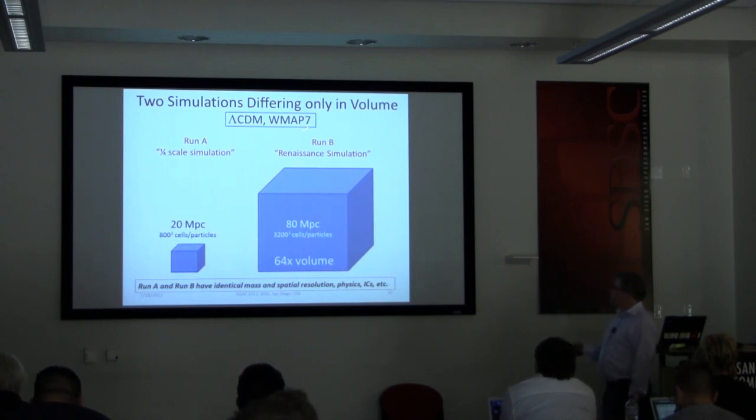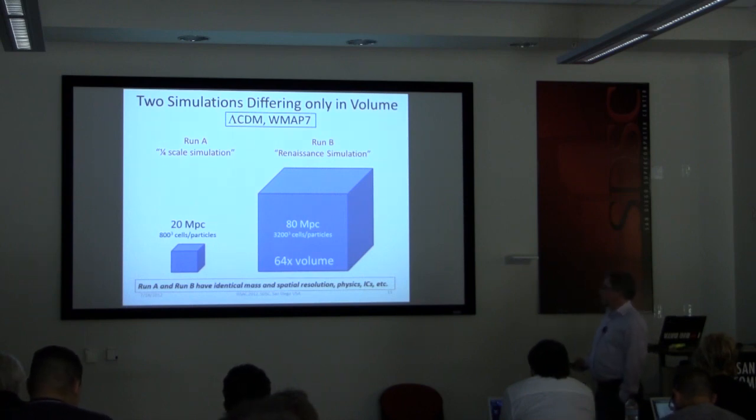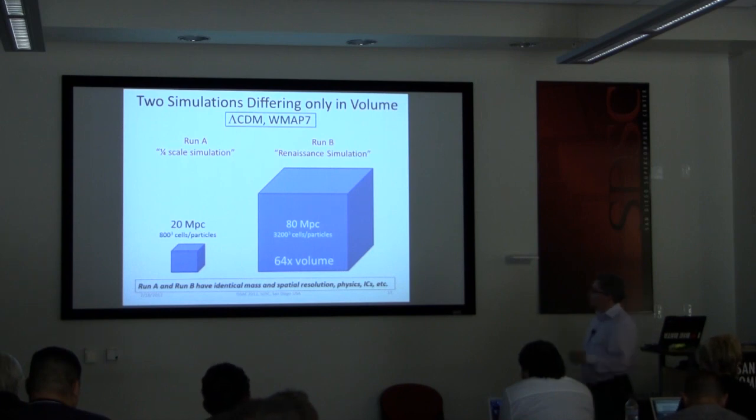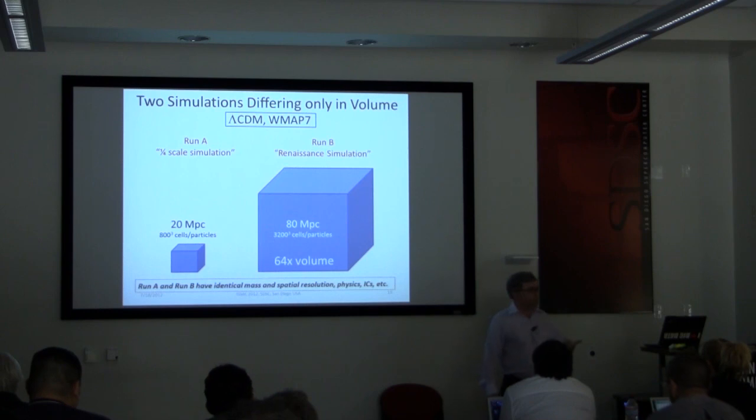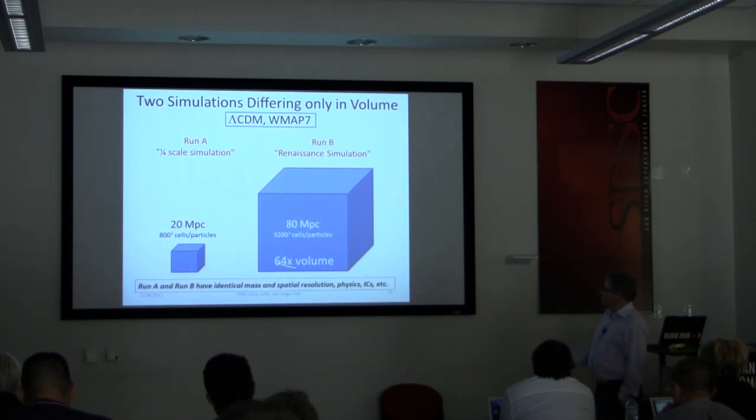So I'll be presenting two simulations to you, differing only in volume. These are using modern cosmological parameters. RUN-A, which is a quarter scale simulation, is in a 20 megaparsec box, 800 cube cells and particles. This used to be considered a big simulation, but it's actually quite tractable. Jeffrey has run five of these in the last year or so. And if I wanted him to run a sixth next week, I could say, Jeffrey, run another one. And then we've got RUN-B, which I'm calling the Renaissance simulation, which is 64 times the volume. So these have identical everything, identical cosmological parameters, spatial resolution, mass resolution, star formation recipe. The only thing that's differing is 64 times the volume.